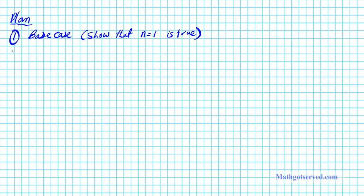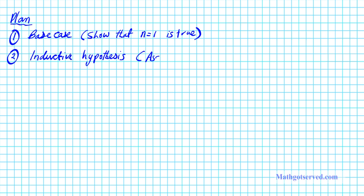The next part is the inductive hypothesis. Here you're going to be making an assumption that the statement is true for a particular integer in the set of all natural numbers. We're going to assume that n equals k is true for some k in the set of natural numbers.